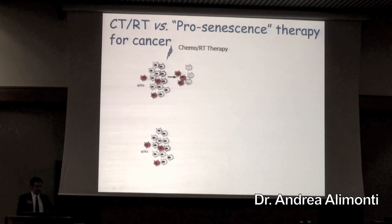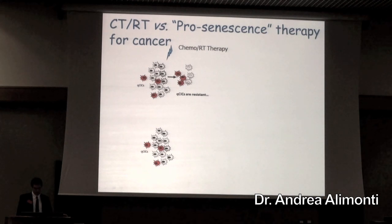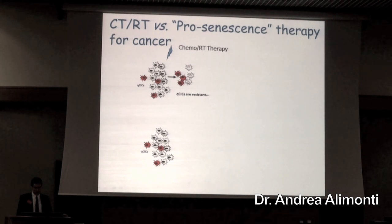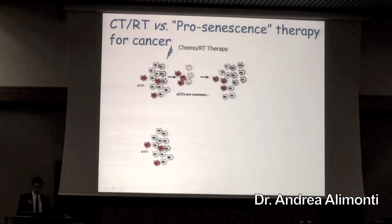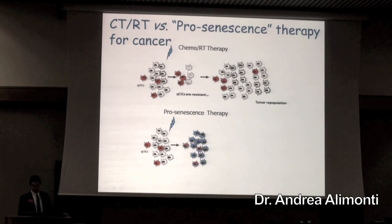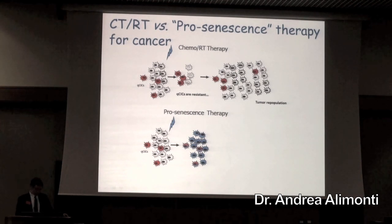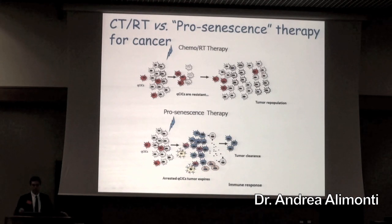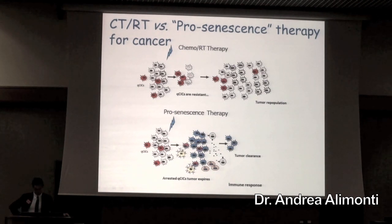This is a cartoon to show you the difference between our pro-senescence therapy for cancer and the chemo radiotherapy approach. In white, we have cells which are actively proliferating. Chemo radiotherapy kills these cells very well, but doesn't touch the quiescent cancer stem cells. After chemo radiotherapy, we end up selecting for those cells, so we have tumor relapse — that's the reason why people die. On the contrary, with pro-senescent therapy for cancer, we want to irreversibly arrest proliferating cells, but also irreversibly arrest quiescent cancer stem cells. With such an approach, we want the tumor to expire so it cannot repopulate.